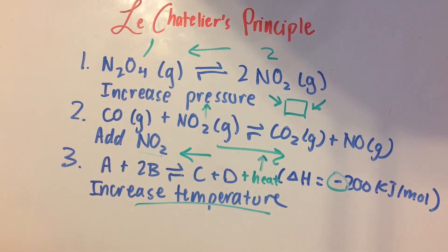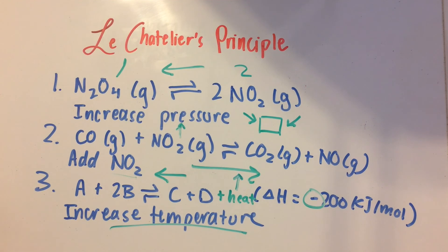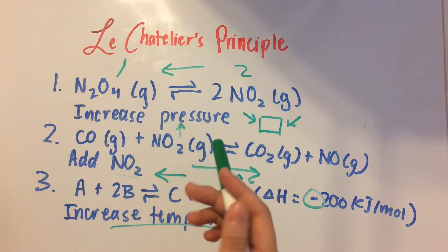So that's basically what Le Chatelier's principle is. When you have too much of one thing, go to the opposite side to balance it out. And when you increase or decrease pressure, go to the side where there's either less or more moles of gas.